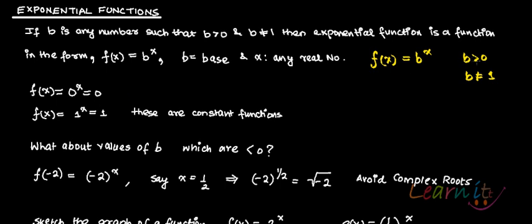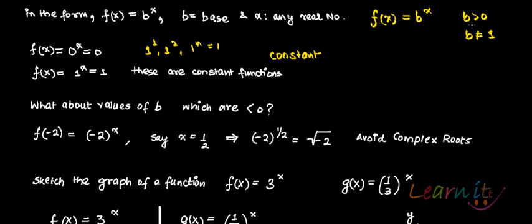Let us see why we are not considering 0 and 1. In case if you have f(x) = 0^x, this will be 0 — a constant function. f(x) = 1^x: if the base is 1, then anything — 1 to the power 1, 1 to the power 2, 1 to the power n — will be equal to 1. So these are constant functions, and you want to avoid constant functions because they do not have the properties of exponential functions. So b is not equal to 1, and b has to be greater than 0.